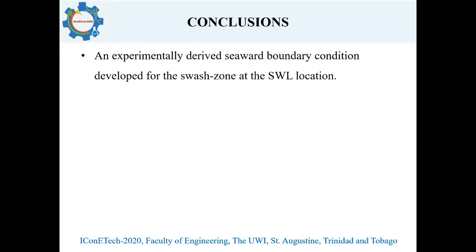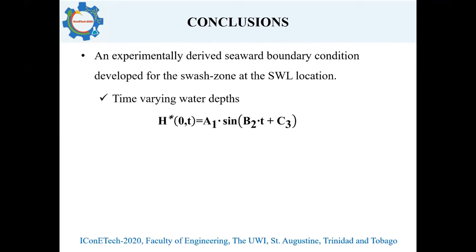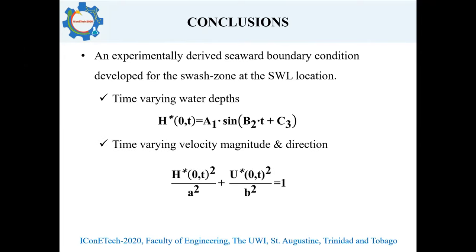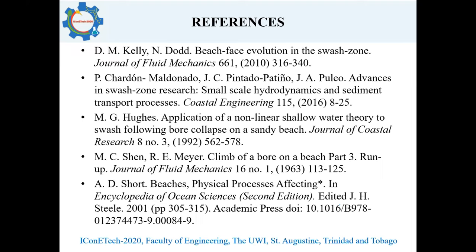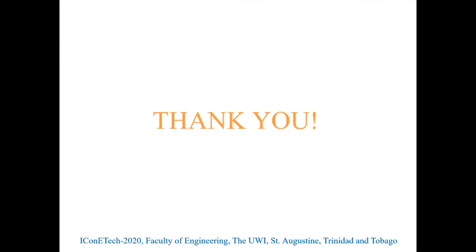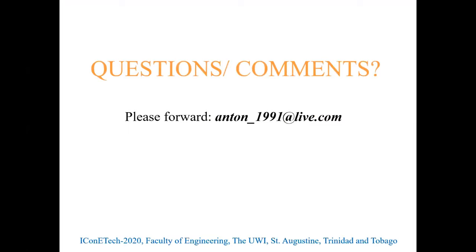In conclusion, an experimentally derived seaward boundary condition was developed for the Swash Zone, to be applied at the still water line location. It describes the water height variation with time as well as the velocity variation with time, given by a sinusoidal fit and elliptical fit respectively. Here are some of the references used in this research. This concludes the presentation; any questions or comments can be forwarded to the email address anson_191@live.com. Thank you.